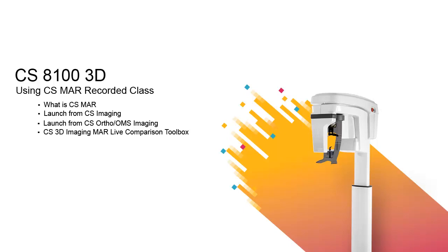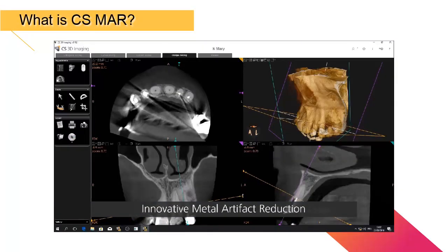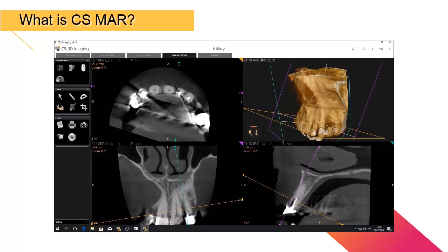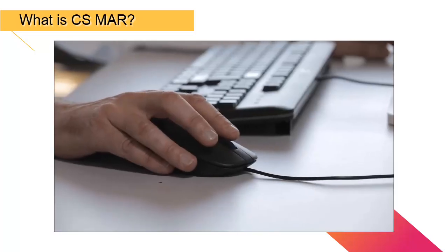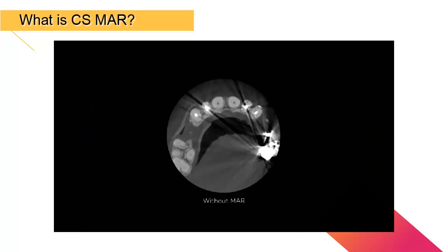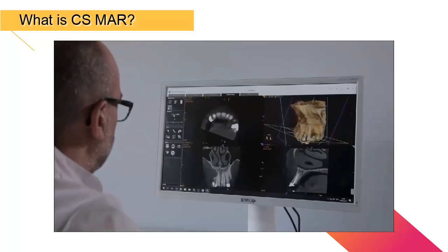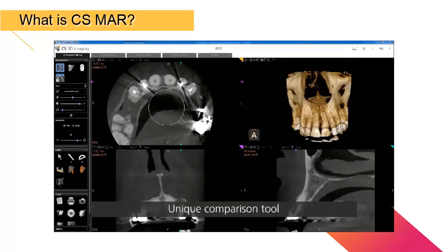This recorded class is designed for clinical team members and provides information on using CS-MAR, Metal Artifact Reduction. CS-MAR drastically reduces metal artifacts caused by dental restorations, implants, and fillings. Practitioners can compare images dynamically with and without the filter to help confirm your patient's diagnosis and reduce the risk of misinterpretation.